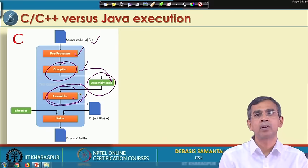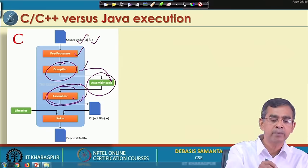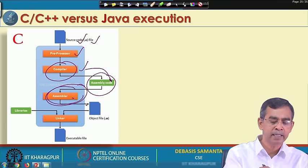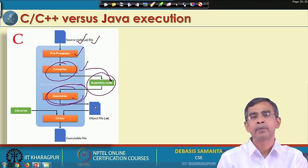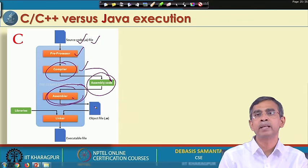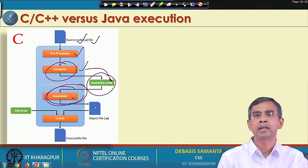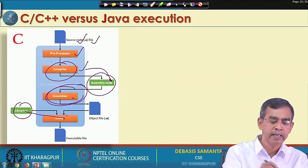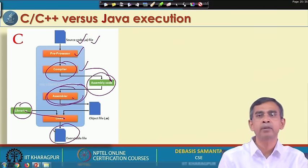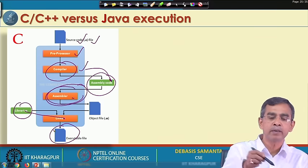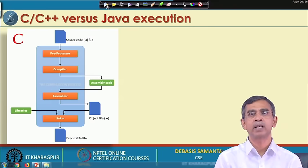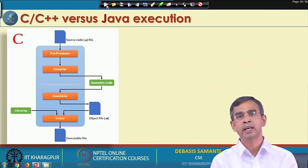The assembler converts the high level program - a '.c' or '.cpp' file - and produces an object file. Sometimes this object file may need help from some libraries or built-in programs, which need to be linked, and finally the executable file is created. This is the way conventional C or C++ programming works - from writing a program to executing a program.